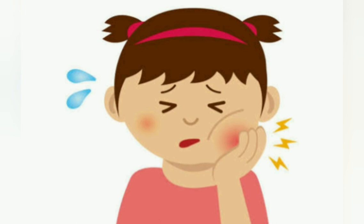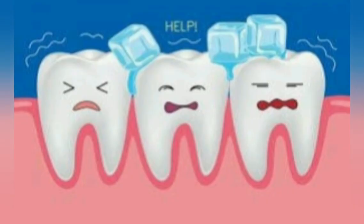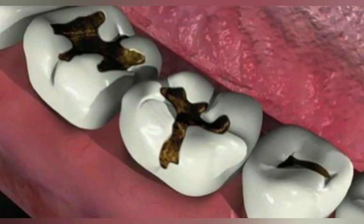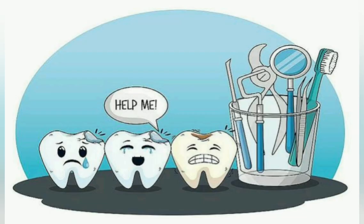If you have a cavity, the signs and symptoms may vary according to the extent and location of damage. The most common symptom is toothache, and there may be mild to sharp pain whenever you eat or drink something sweet, hot, or cold. There may also be brown or black stains on teeth with visible holes on the surface. If you experience these signs and symptoms, your teeth need to be treated to prevent further infection of the tooth structure.